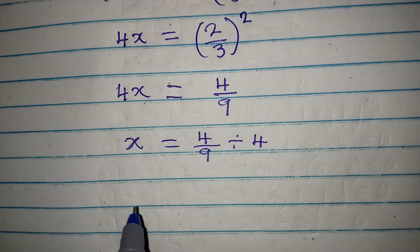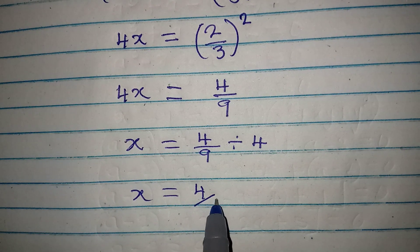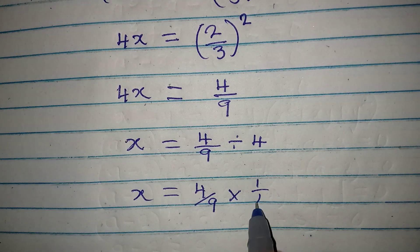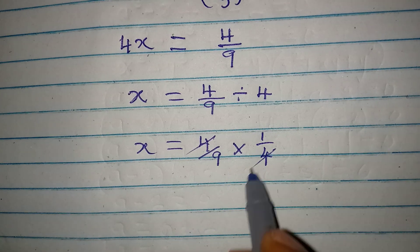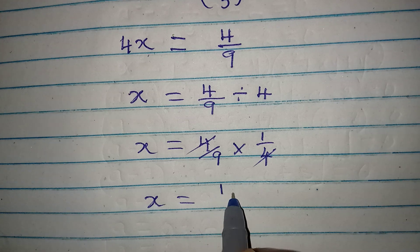Now x will be equal to 4 over 9 multiply by 1 over 4. Okay, so this way this and this will be gone, and then x will be equal to 1 over 9.